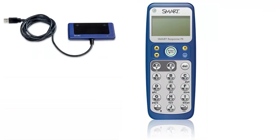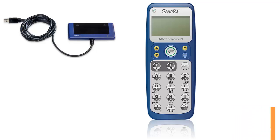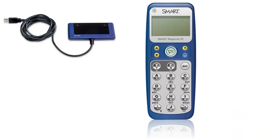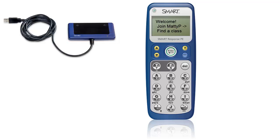Whenever you use response, always plug the receiver in first and wait until a message appears in the system tray saying you can turn the handsets on. This only takes a minute or so. During that time your receiver will go through the startup process. You know this is finished when the power light goes green and the other light flashes at a quick rate, telling you that the receiver is transmitting data.